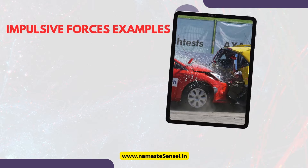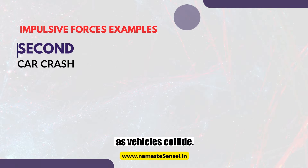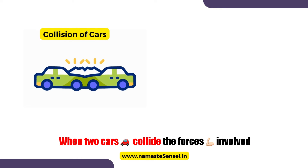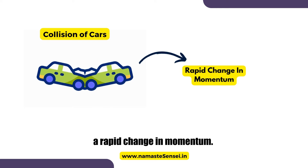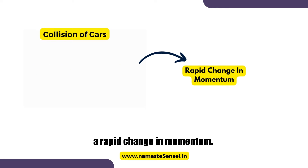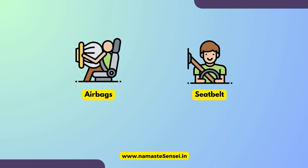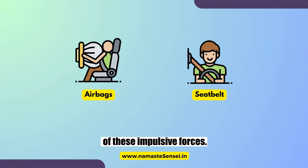Second, a car crash. In a car crash, impulsive forces come into play as vehicles collide. When two cars collide, the forces involved act over a short period, leading to a rapid change in momentum. This is the reason why airbags and seatbelts are designed, which will help to mitigate the effects of these impulsive forces.